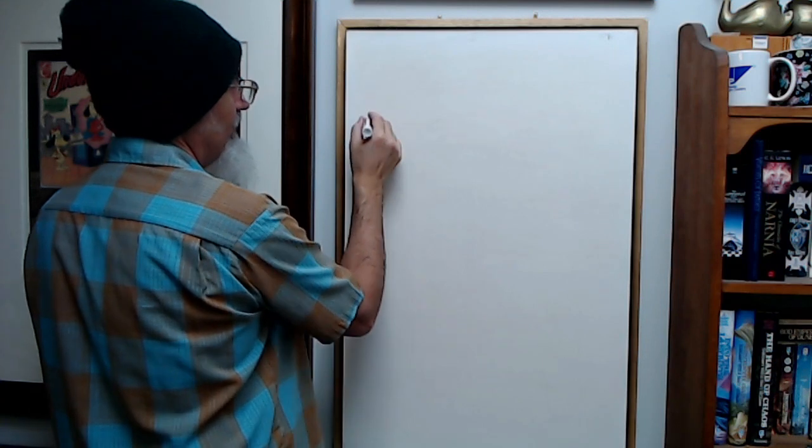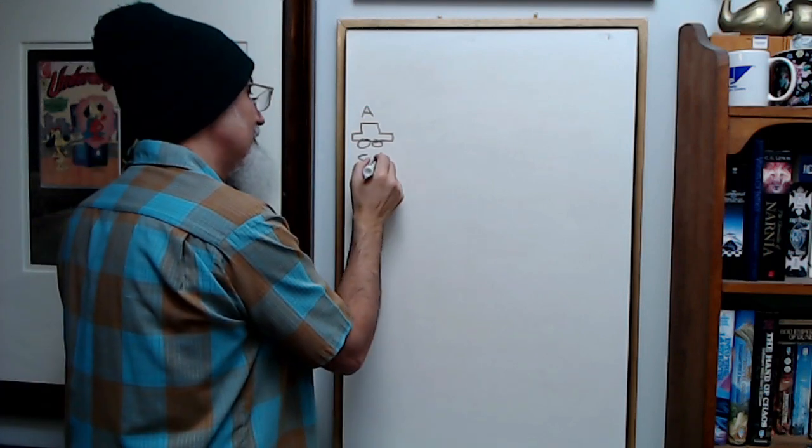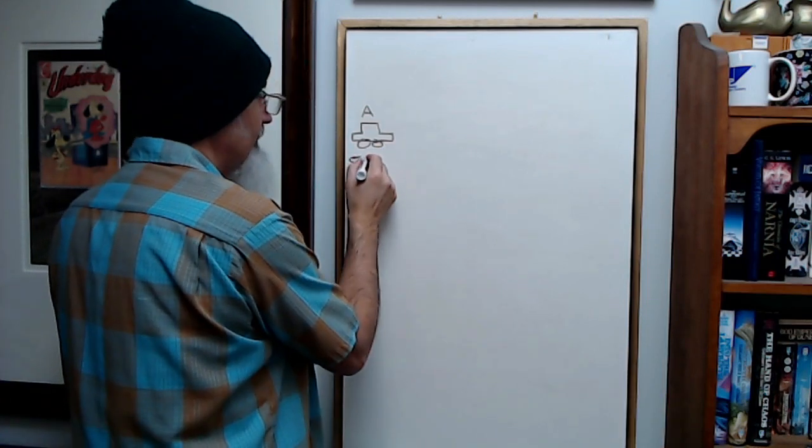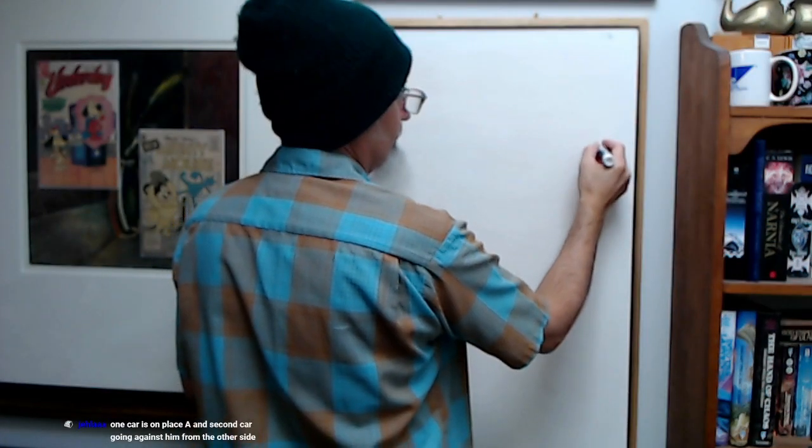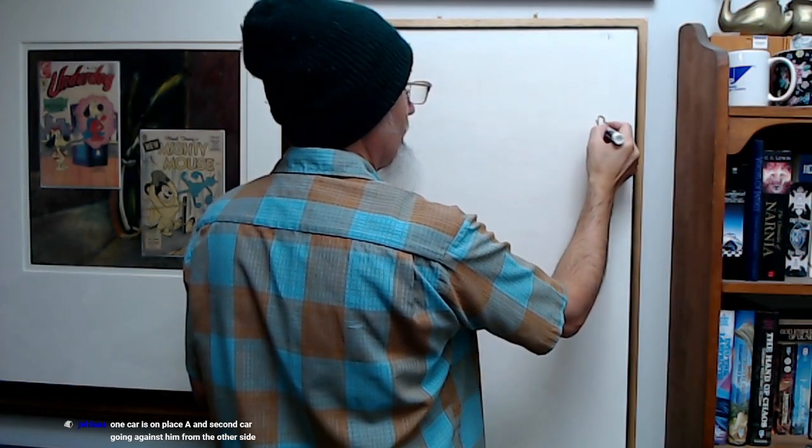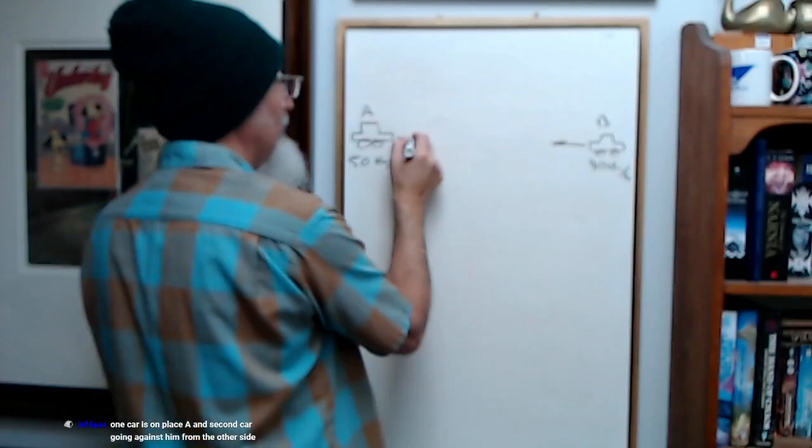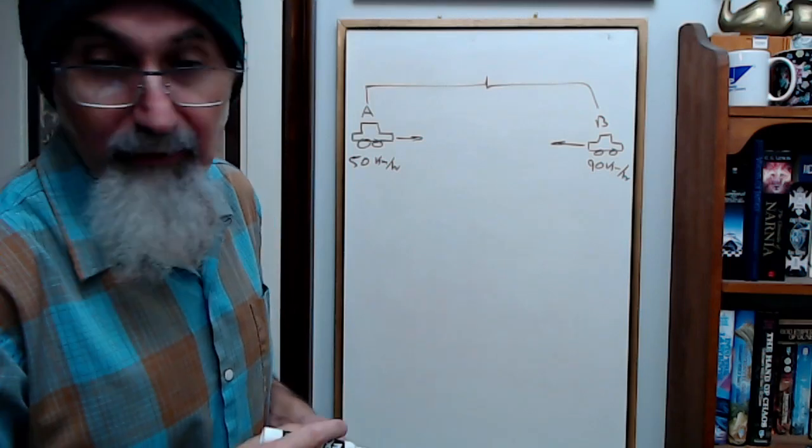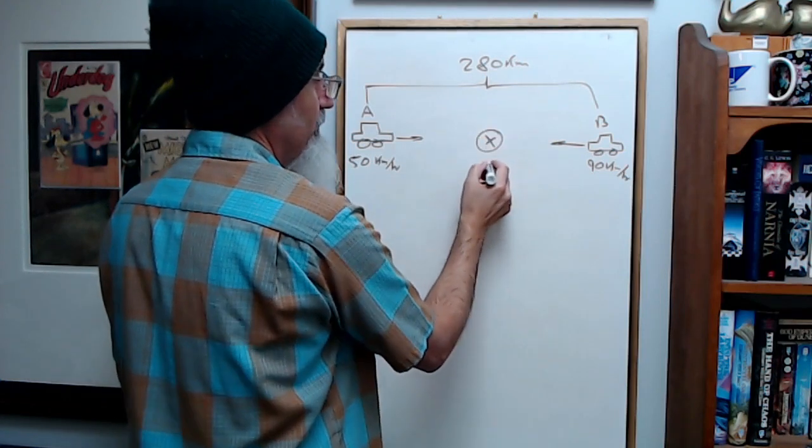Here's car A. Car A is going 50 kilometers per hour. Here's car B. Car B is going 90 kilometers per hour. Car B is going this way, car A is going this way, and the distance between them is 280 kilometers. Where do they meet?